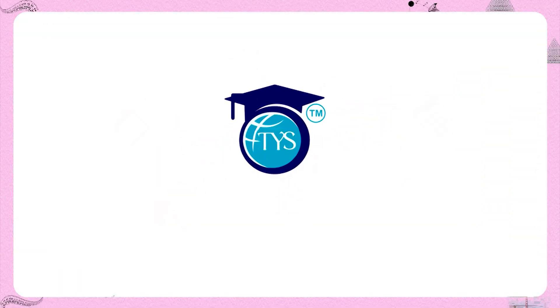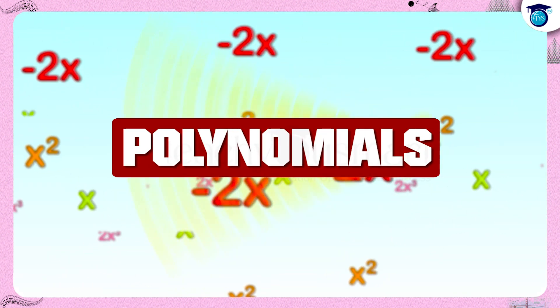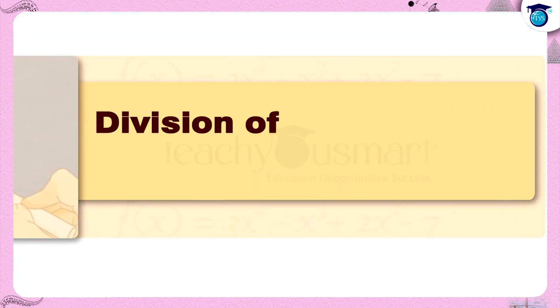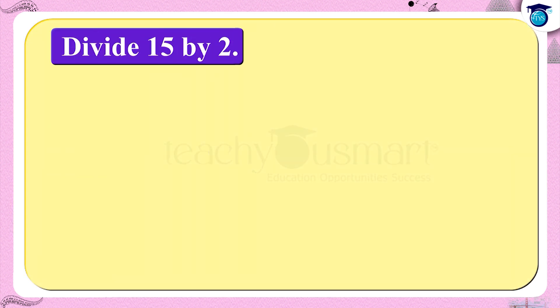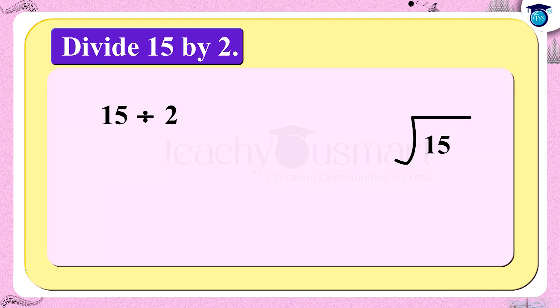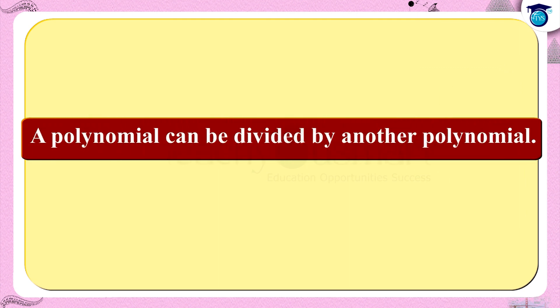Hello students, welcome to Teach You Smart. Let's continue our journey through polynomials. Today we are going to discuss the division of a polynomial by another polynomial. In the case of numbers, if we divide 15 by 2, the quotient is 7 and the remainder is 1. Similarly, a polynomial can be divided by another polynomial.